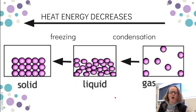So when we go the opposite way, we'll meet some different words here. If we start off with steam, as we cool the steam, it's called condensation. It becomes a liquid and then if we cool it further, it freezes to become a solid. So as we move down from the gas through to the solid, the heat energy is decreasing.